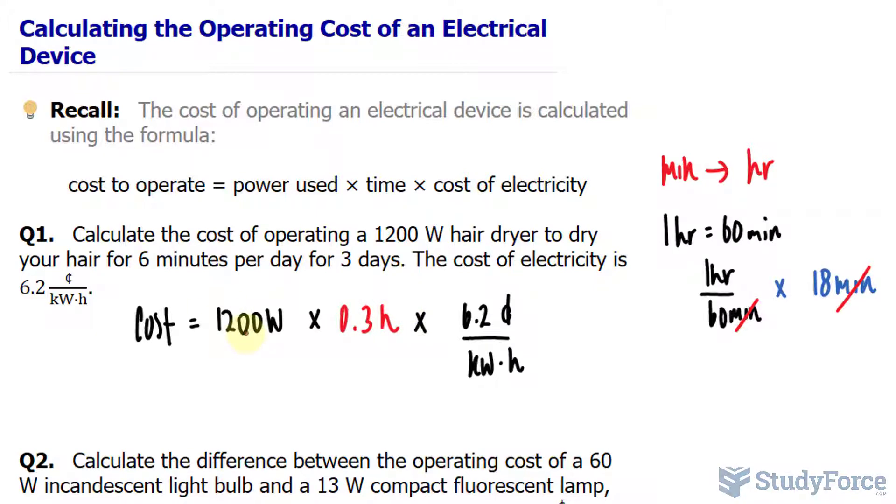Furthermore, 1200 watts needs to be in kilowatts because the rating, again, is in kilowatts. So to go from watts over to kilowatts, we divide by 1000. Let me show you that over here. So I have 1200 watts divided by 1000.